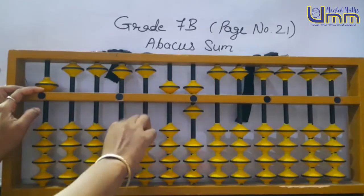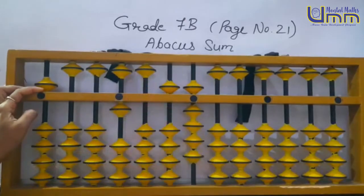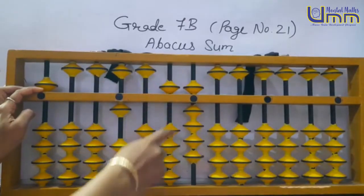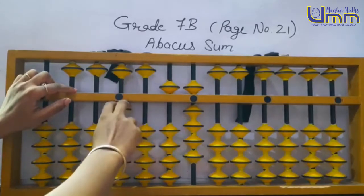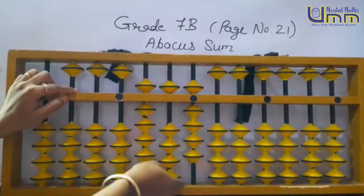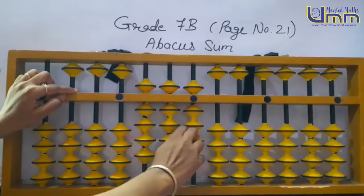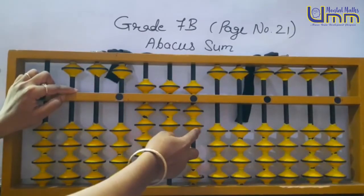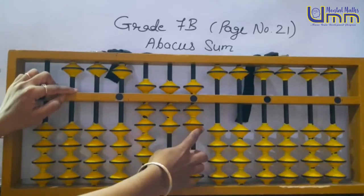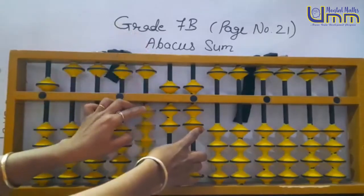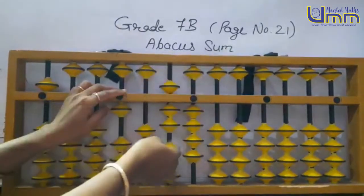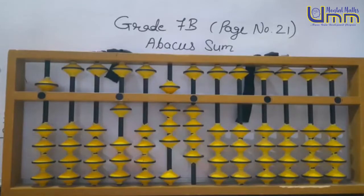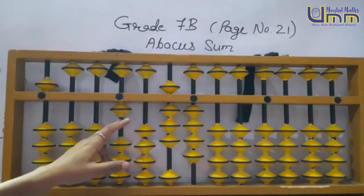703: 7 minus 3 plus 10, 0, 3 directly. Minus 62: can you do minus 6 directly? No. So minus 10 plus 4; minus 2 directly. 87: 80 minus 2 plus 10, 7, plus 2, minus 5 plus 10. That is 1084. Second answer is 1084.